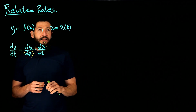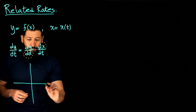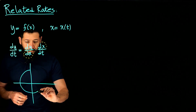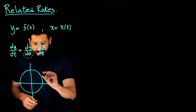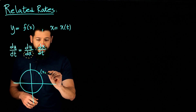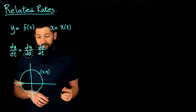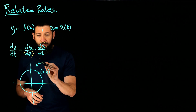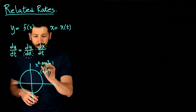Let's imagine we have the following problem. We have a particle traveling on the unit circle. Let me remind you that any point on the unit circle satisfies the equation x² + y² = 1. So let's assume our particle is on the unit circle, meaning it satisfies that equation.